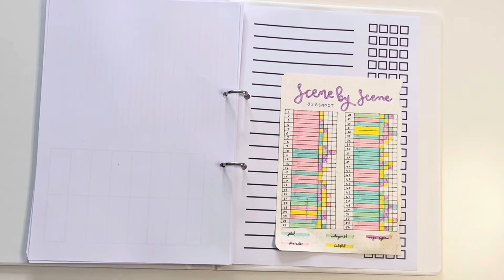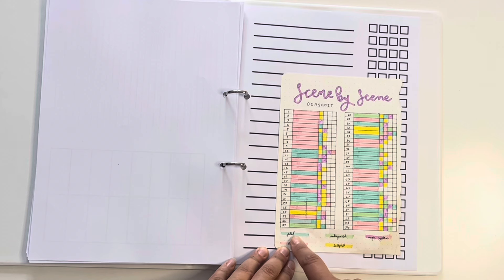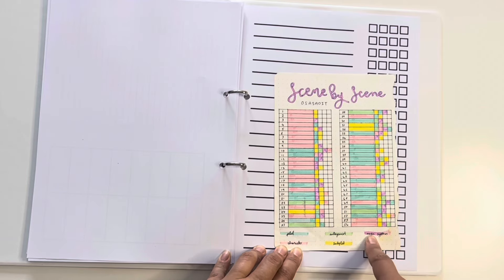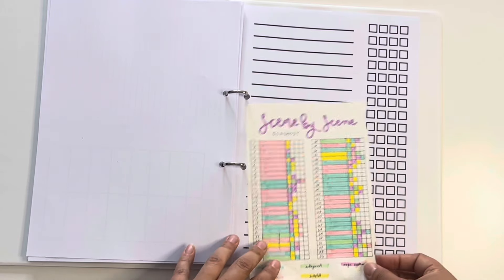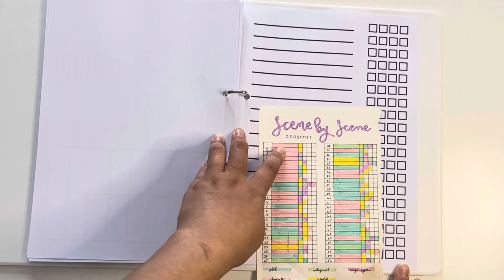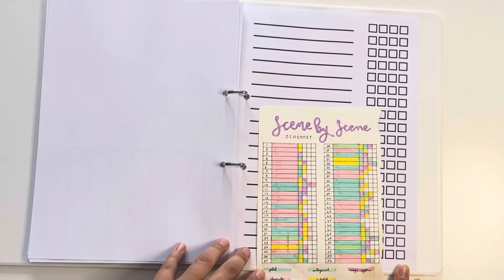A scene by scene. So every element that I would have in regards to the plot is here. Plot, character, subplot, antagonist, magic system. And basically, all I did was go through and I highlighted the main purpose or the main point or the main focus that I had of those chapters.